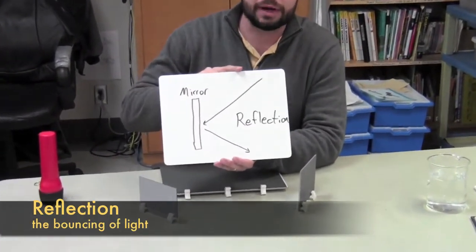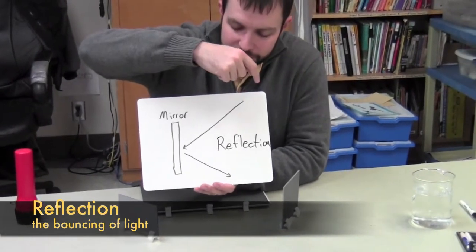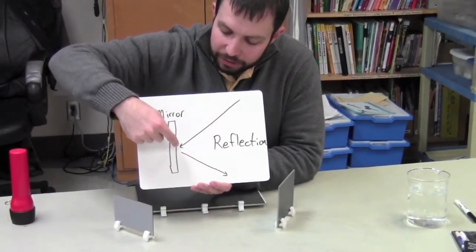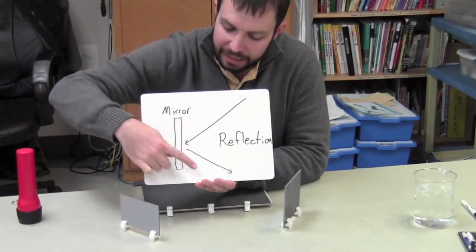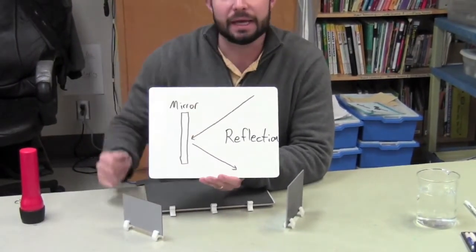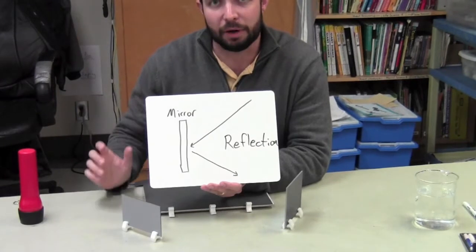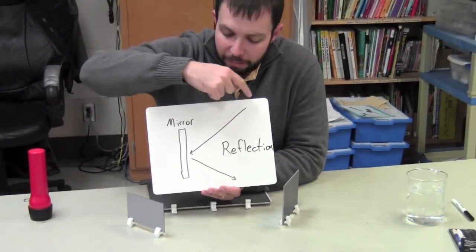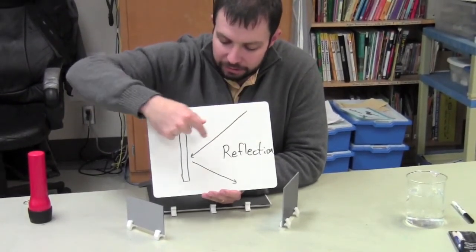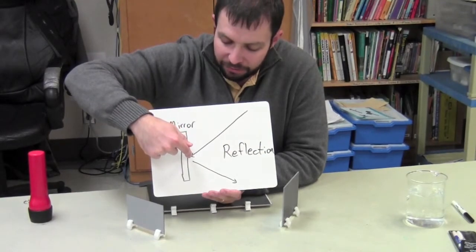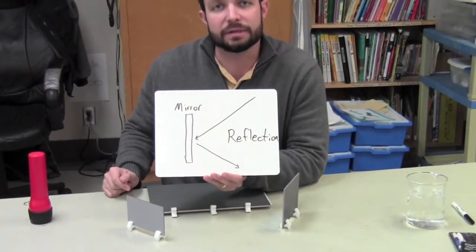We know that light travels in straight lines. When it travels in a straight line and comes in contact with the mirror, it bounces back in a different direction. Much like a basketball player bounces a ball to a teammate, the light bounces off the mirror in an opposite direction.